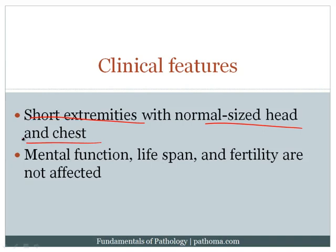The second way bone is formed is endochondral bone formation, where a cartilage matrix is established, the cartilage dies, gets calcified and mineralized, and then becomes bone. This is the key mechanism by which long bones grow. The growth plate is made of cartilage; chondrocytes die at one edge and are replaced with bone. These patients present with short extremities because of a defect in chondrocyte proliferation at the cartilage growth plate.